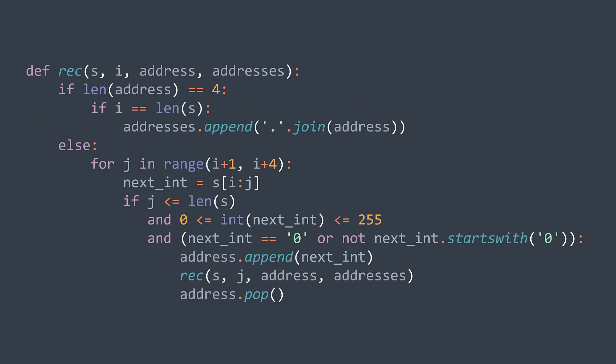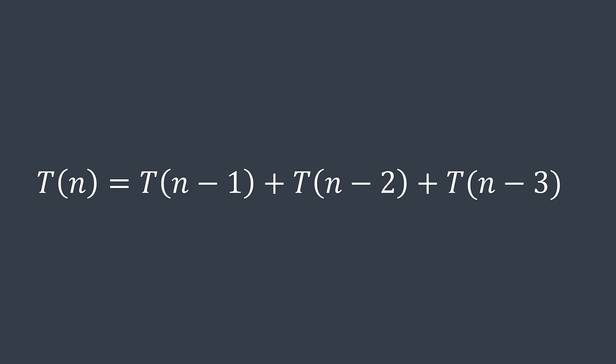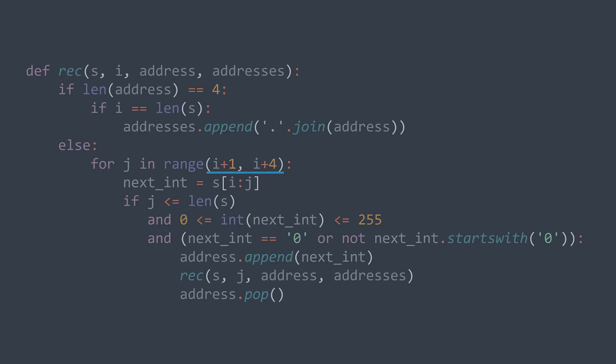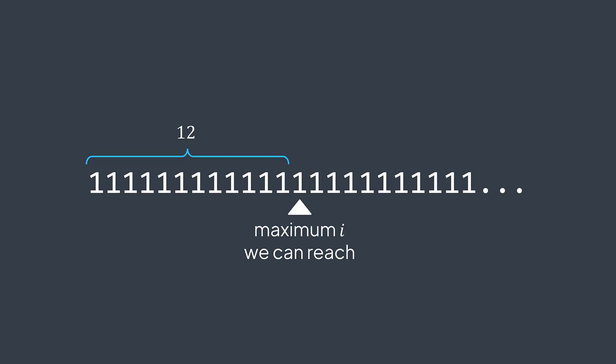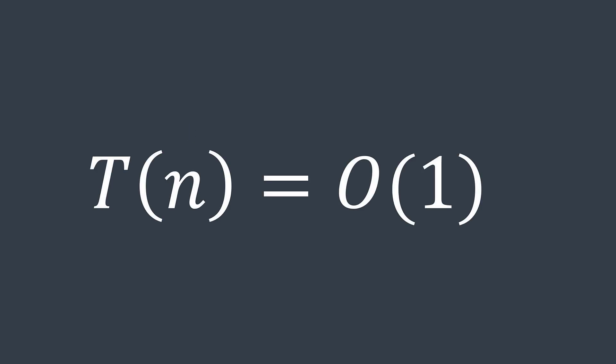For the time complexity, we have at most three recursive calls where we move by one, two, and three characters respectively. This gives the expression T(n) = T(n-1) + T(n-2) + T(n-3), which yields an exponential time complexity. However, for this particular problem, we take integers of at most three digits and stop as soon as we have four integers. This means no matter the length of string S, we move forward by at most 12 characters — four integers of three digits each. Since 12 is a constant, we get a constant time complexity.